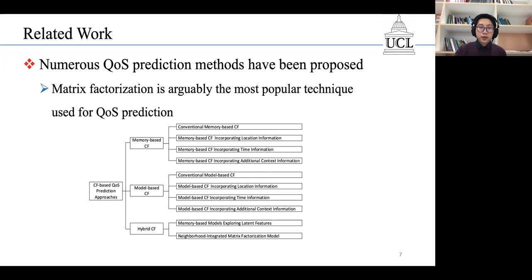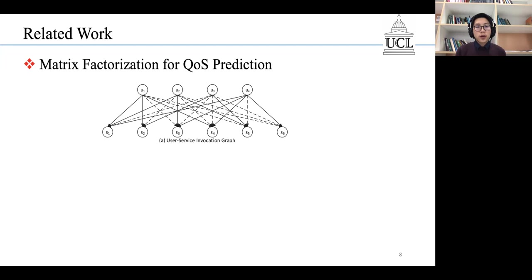Suppose that we have a set of users, a set of services, and also a set of QoS observations. Then, we can represent these observations by a user-service matrix.